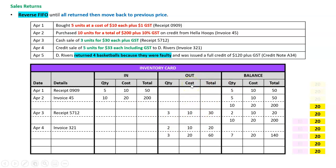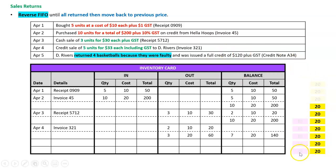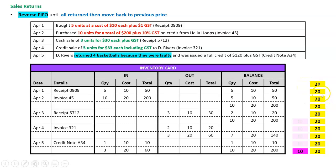I have no idea which basketballs D Rivers is returning, but it doesn't matter — I apply reverse FIFO. I can't say all four came back at twenty dollars because D Rivers only bought three twenty-dollar ones. I can't create an eleventh twenty-dollar unit that never existed, so I have to move back to the previous price. I'll assume three came back at twenty dollars and one at ten dollars.